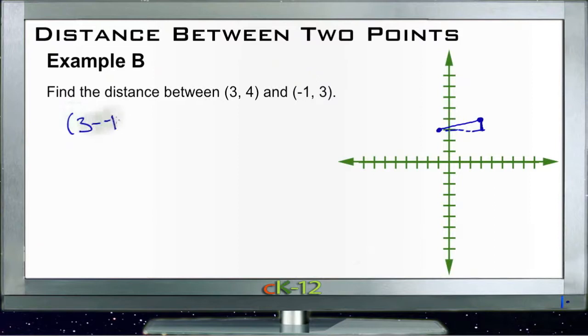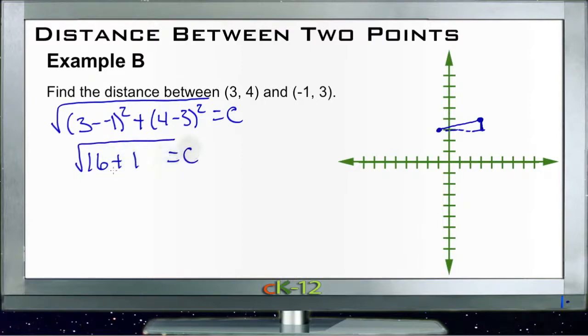To find our x coordinate we take 3 minus -1, we're going to square that and add it to 4 minus 3, square that, and then we'll take the square root of the whole thing to find c. Well, 3 minus -1 is 4, 4² is 16, so we're going to have the square root of 16 plus 4 minus 3 is 1, square root is still 1. So c equals the square root of 17. It's going to be a little bit more than 4 because 4² is 16, so it's going to be like 4.2 or something. We'll say 4.2 is approximately equal to c.